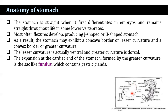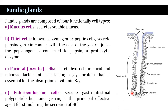The fundus contains the gastric glands. The fundic glands are composed of four functionally distinct cell types. First, mucus cells that secrete soluble mucus. Second, chief cells, also known as zymogen cells or peptic cells, that secrete pepsinogen. On contact with the acids of the gastric juice, the pepsinogen is converted to pepsin, a proteolytic enzyme.